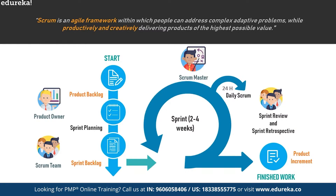There are certain key terms you should know when talking about scrum. A scrum project is comprised of three vital roles: product owner, scrum master, and development team. There are four events — sometimes called ceremonies — which are sprint planning, daily scrum, sprint review, and sprint retrospective. And there are three artifacts used to track work: product backlog, sprint backlog, and product increment. There are also burndown charts. If you want to know more, refer to the scrum video in the Edureka playlist linked in the description below.